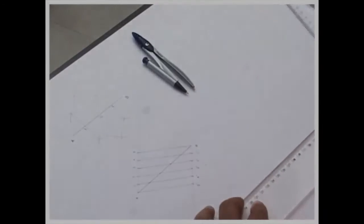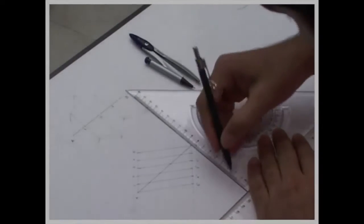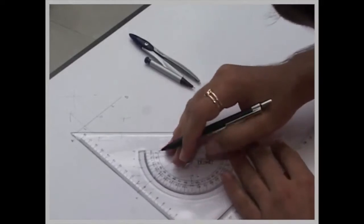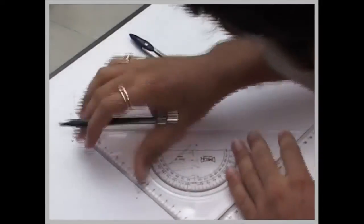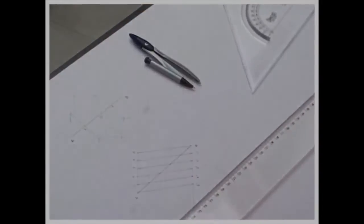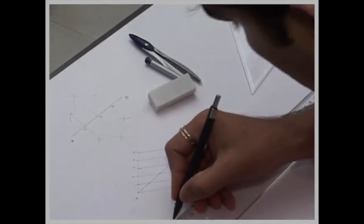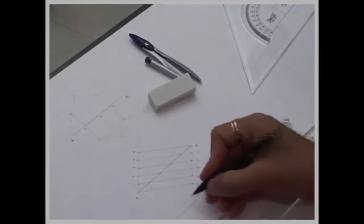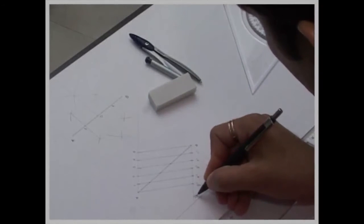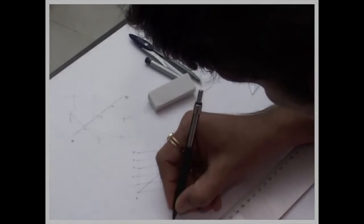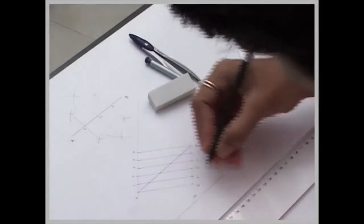And always remember, if you want to do dimensioning, we'll be doing dimensioning this way. We'll draw a light line, very light line. And this is 90, so I'll be writing 90 above the line. And the arrow has to be this way.